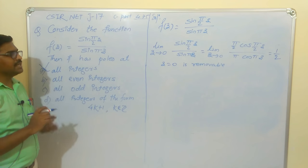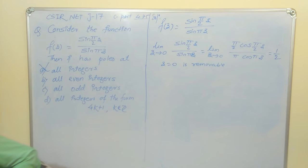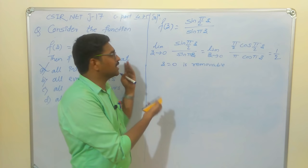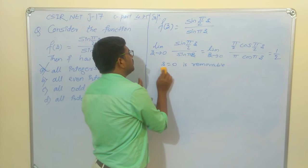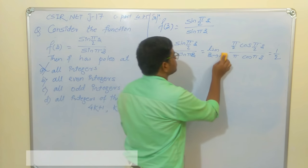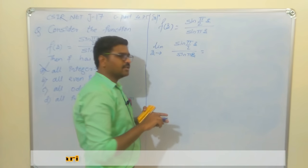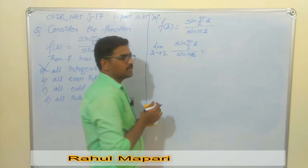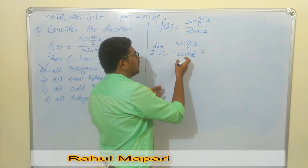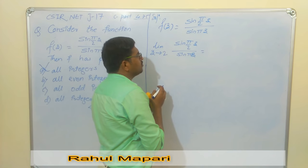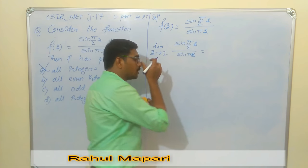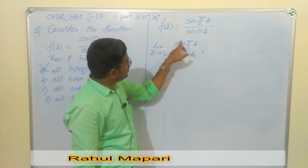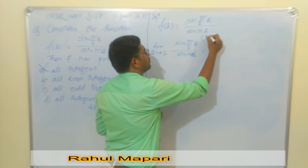Now let us check Option B: all even integers. Let's try z=2. For even integers, sin(π·2/2) = sin(π) = 0 and sin(π·2) = sin(2π) = 0, so we get a 0/0 form again. We apply L'Hôpital's rule: (π/2)·cos(πz/2) / (π·cos(πz)), evaluated at z=2.